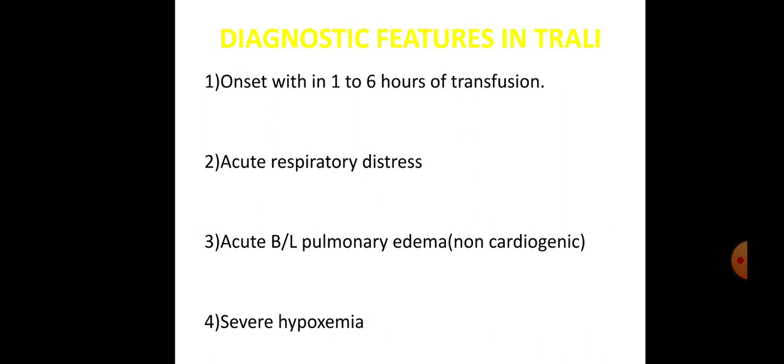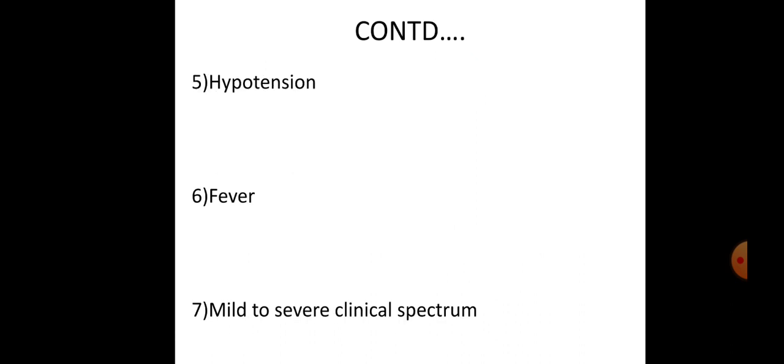Diagnostic features of TRALI: onset within 1 to 6 hours of transfusion, acute respiratory distress, acute bilateral non-cardiogenic pulmonary edema, severe hypoxemia, hypotension, fever. The clinical spectrum ranges from mild to severe.